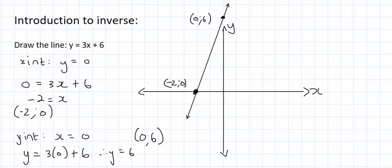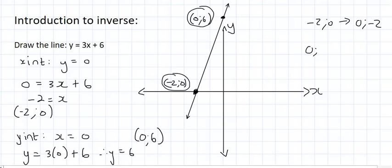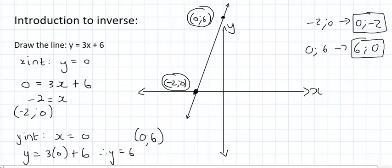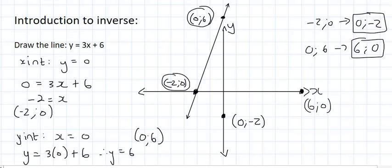Now we are going to explore what would happen if we take the inverse. Inverse means opposite. All you do is take these two coordinates and flip them over. So minus 2, 0 becomes 0, minus 2. And 0, 6 becomes 6, 0. Then we take these two points and plot them on the diagram: 0 and minus 2 would be here, and 6 and 0 would be over here. Then we connect those two.